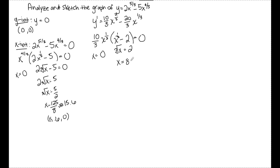I place x equals 0 and x equals 8 on a number line labeled y prime. I need to test an x value in each of the three intervals to see if the first derivative is positive or negative. A positive first derivative means y is increasing; a negative first derivative means y is decreasing. When plugging in, use the factored version — it's much easier. You only care about the sign, not the actual number, so you're doing rough math here.